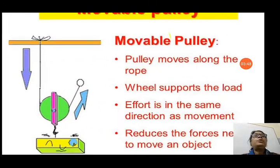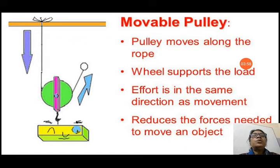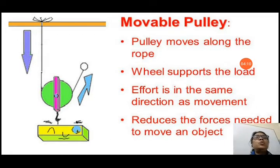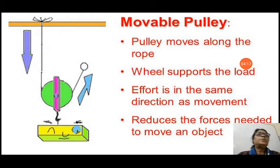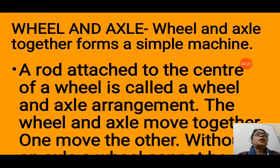In a movable pulley, the pulley itself moves along the rope. The wheel supports the load, and the effort works in the same direction as the movement of the load. It reduces the force needed to move an object, giving a mechanical advantage, which makes it very helpful in moving heavy objects.